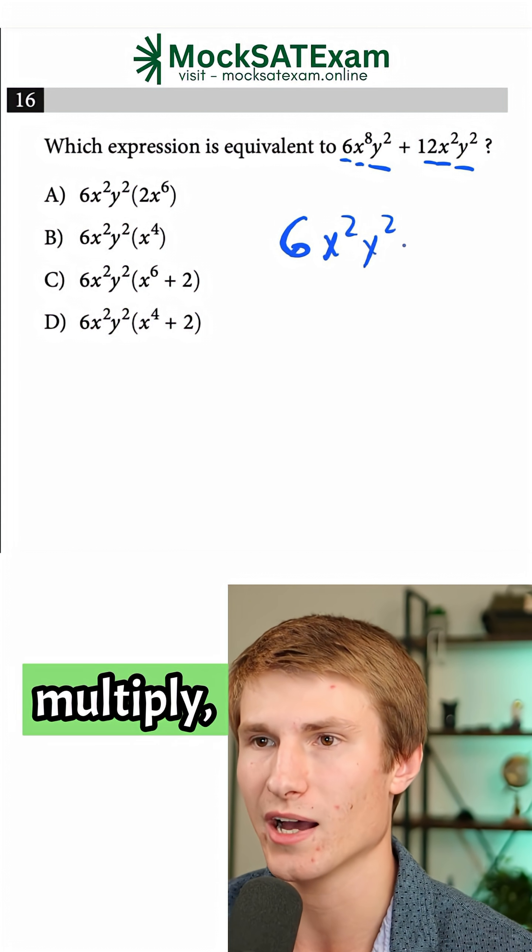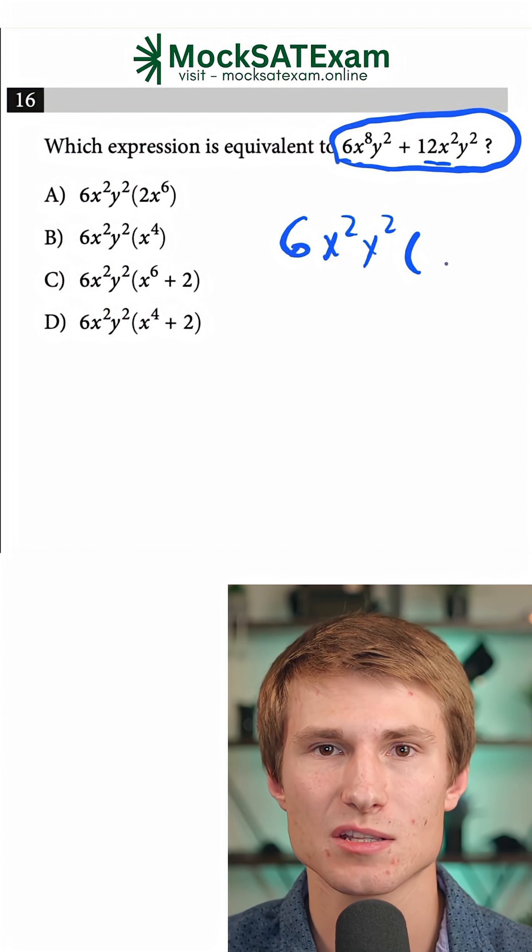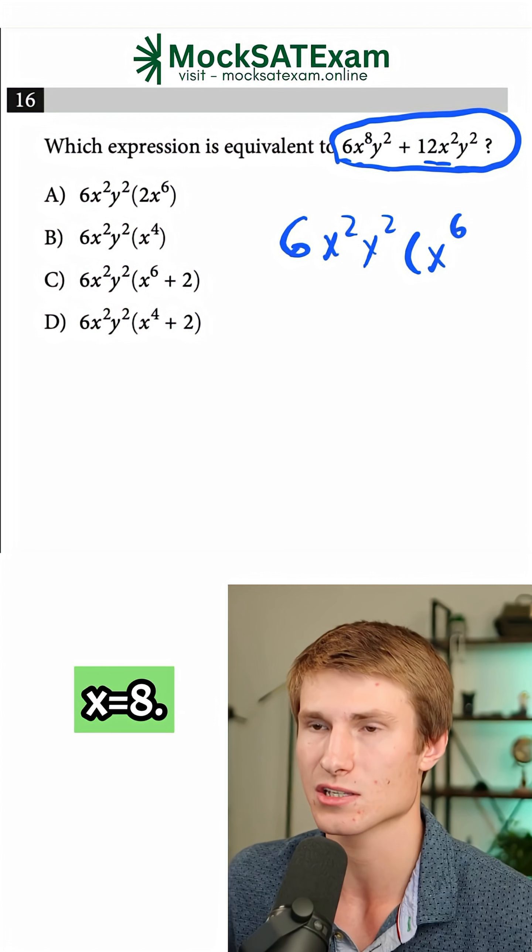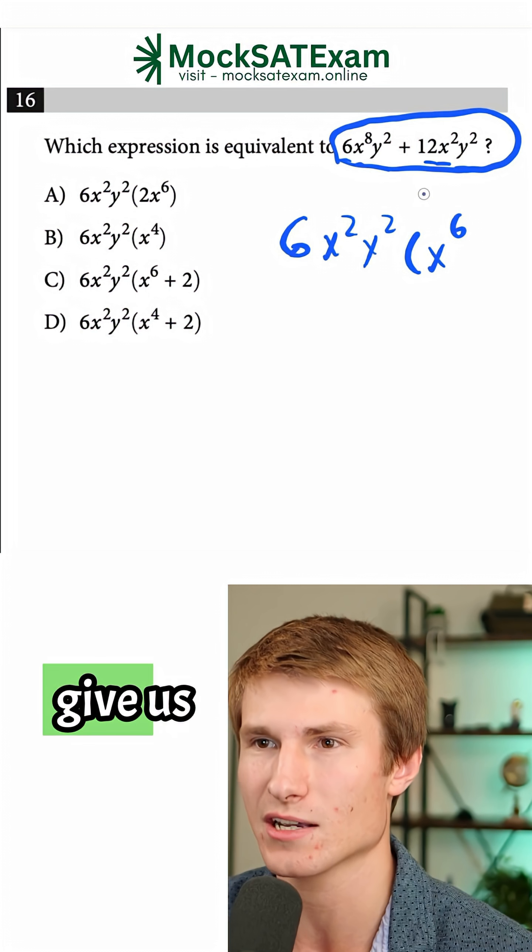We still have to multiply to get this equation. So what do we have to multiply by here? We're going to need x^6 still to get to that x^8. Keep in mind that this x^2 times this x^6 is what's going to give us x^8.